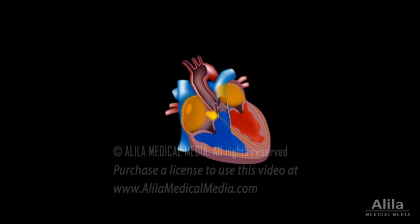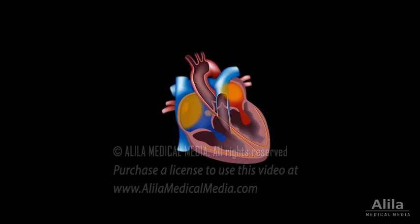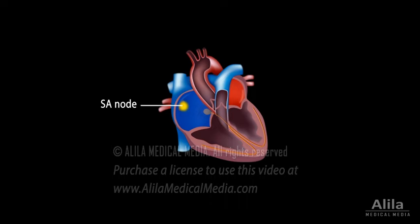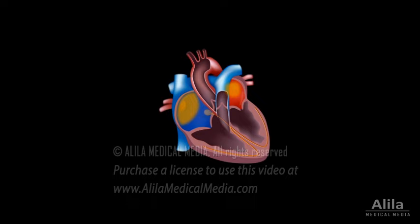The heart is essentially a muscle that contracts and pumps blood. Contractions of the heart muscle are coordinated by electrical impulses that are initiated in the heart's natural pacemaker, the SA node. The firing frequency of the SA node determines the heart rate, and its signals spread through the cardiac conduction system in a synchronized manner to produce regular heartbeats.